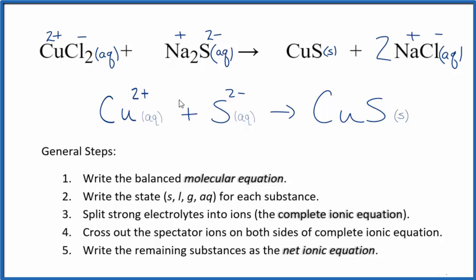You'll note charge is conserved. We have a 2 plus and a 2 minus — that adds up to zero, a net charge of zero. Over here, neutral compound, net charge of zero. The atoms are balanced too. This is Dr. B with the balanced net ionic equation for CuCl2 plus Na2S.